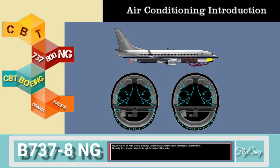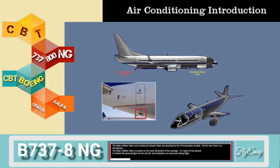Recall that the air flows around the cargo compartments, and not into or through the compartments. Normally the cabin air exhausts through the main outflow valve. The main outflow valve is located on the lower aft portion of the fuselage. It is open on the ground, controls the pressurization of the aircraft, and modulates as necessary during flight.